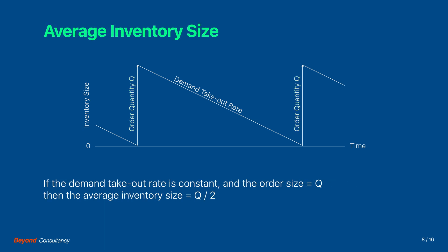In order to formulate the inventory costs, we need to determine the average inventory size. If the demand takeout rate is constant and the order size is assumed to be equal to Q, then the average inventory size becomes Q divided by 2.